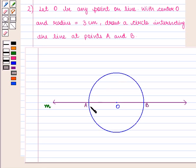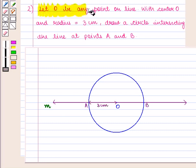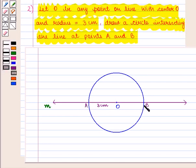The circle will intersect the line at two points. Let us label the two points as A and B. AB is the diameter of the circle, which is equal to 6 cm.